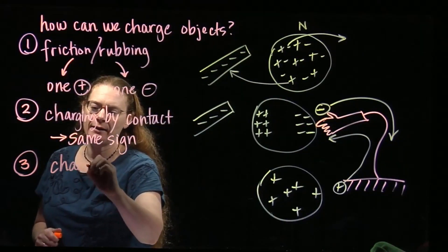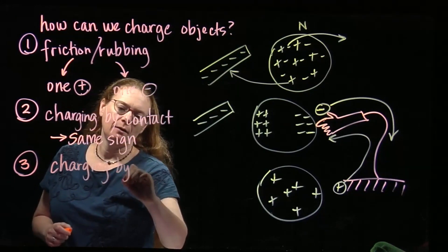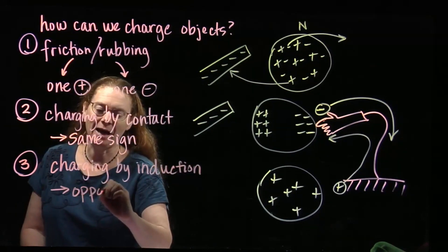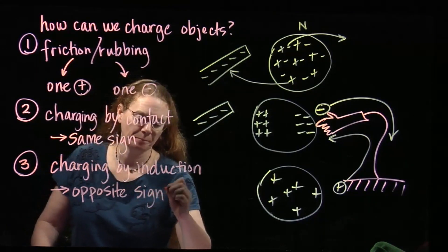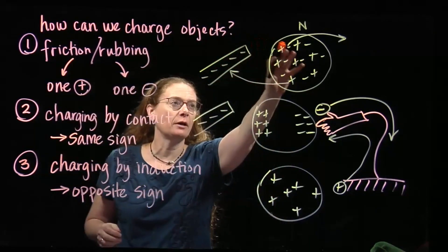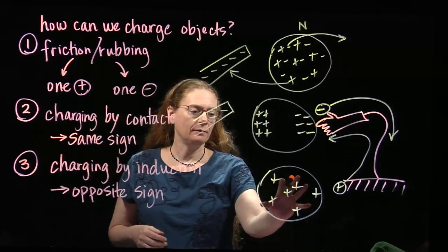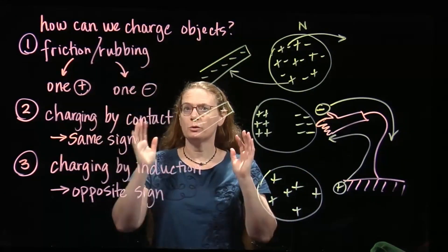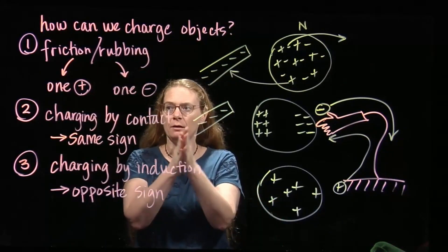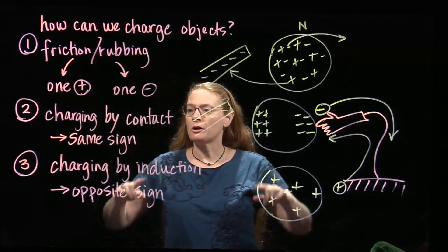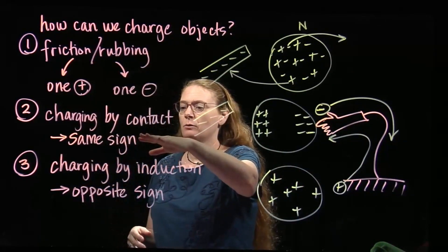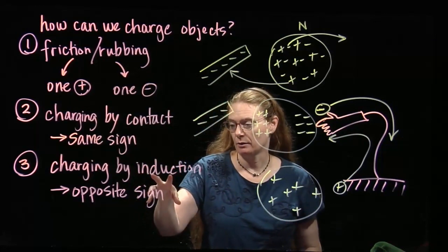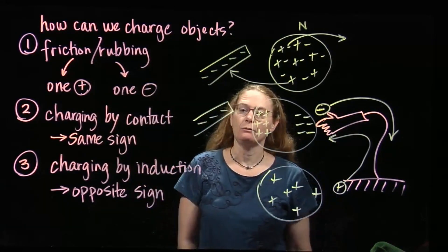We call this charging by induction. When we have charging by induction, the object gets the opposite sign of whatever it was charged by. So if we use a negative rod to charge the ball, the ball becomes the opposite sign — it becomes positive. We've got three different ways to charge objects: friction/rubbing, where one becomes positive and one becomes negative; charging by contact, which gives the object the same sign; and charging by induction, which gives the object the opposite sign.